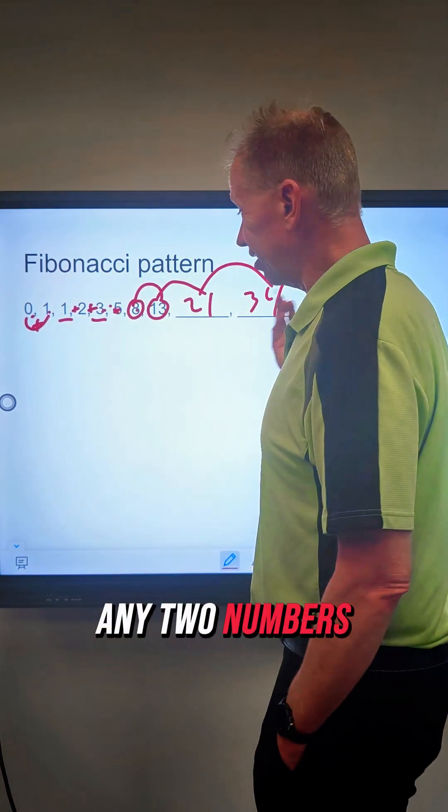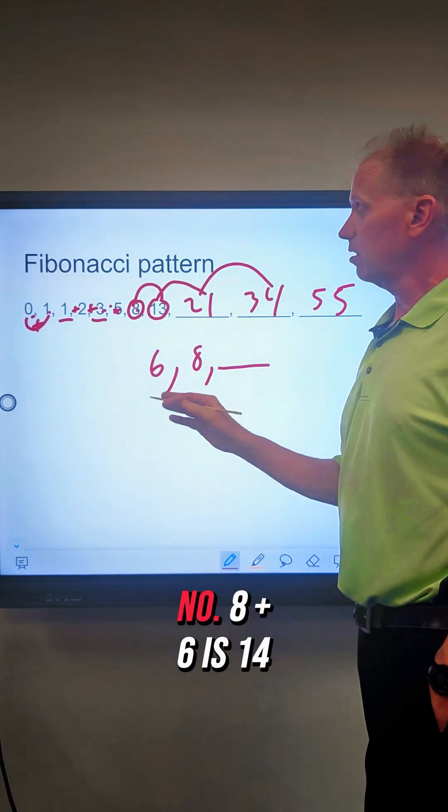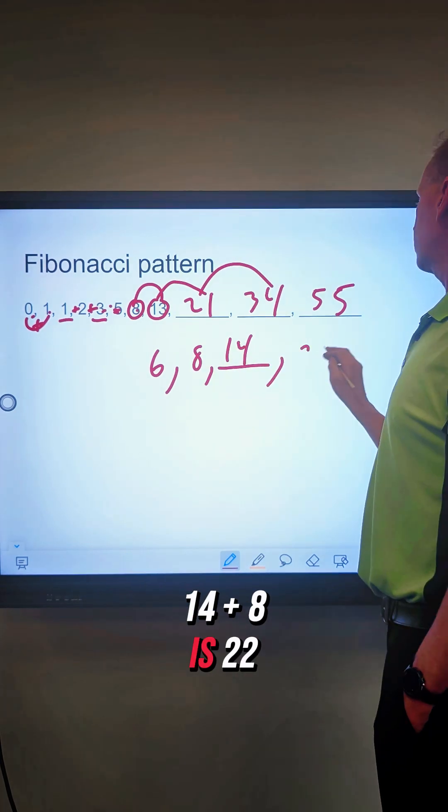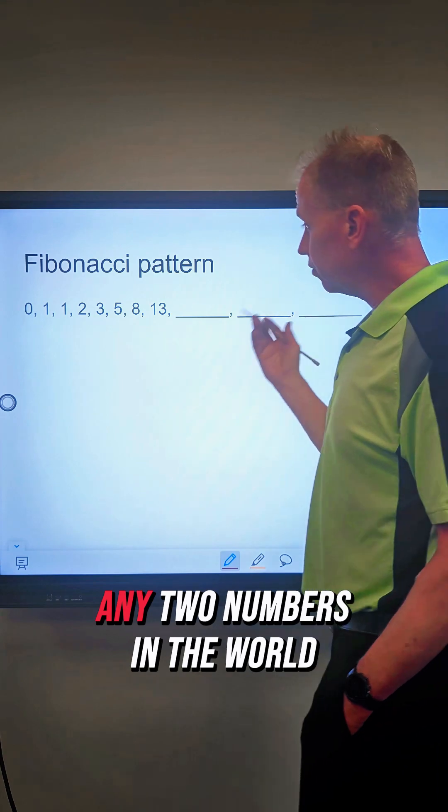But you can do this with any two numbers. Let's just pick two numbers, 6 and 8. What's the next number? 8 plus 6 is 14, 14 plus 8 is 22, and you can keep going. So you can do this for any two numbers in the world.